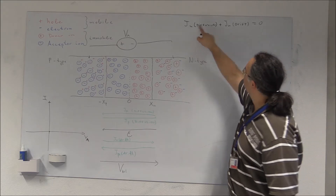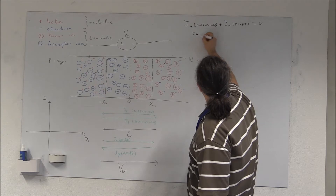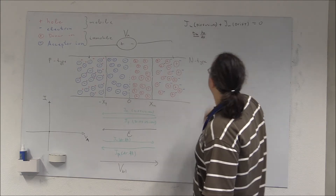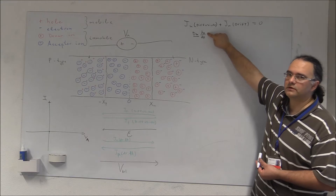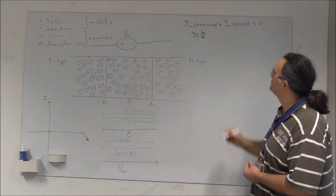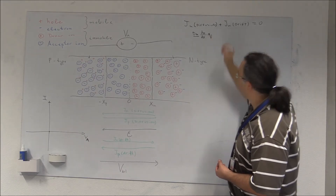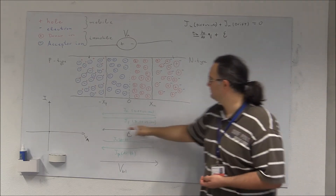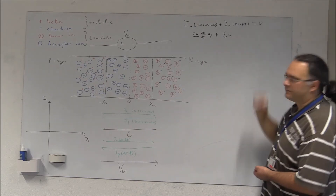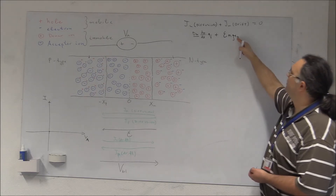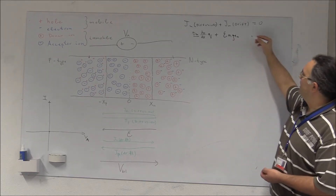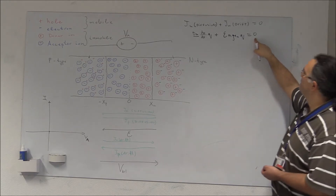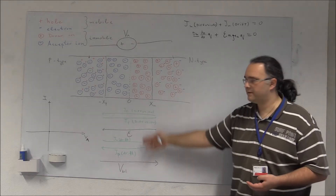The diffusion current is the diffusion constant times the gradient of the electron concentration dN/dx times the charge Q. The drift current depends on the electric field, the concentration of carriers, their mobility μN, and the charge. Setting their sum to zero gives the basic thermal equilibrium equation.